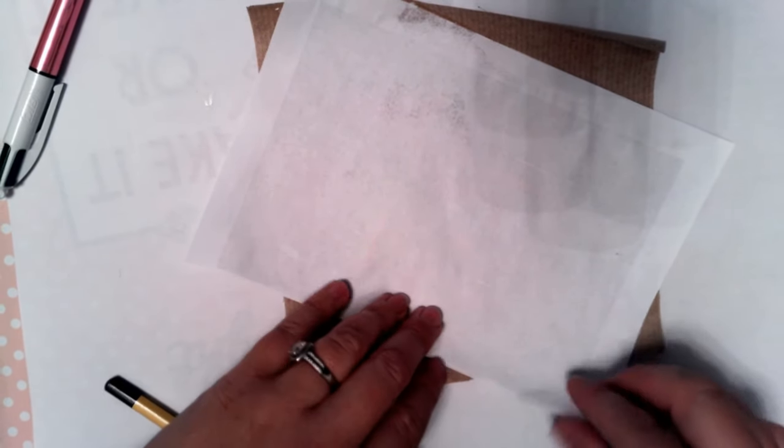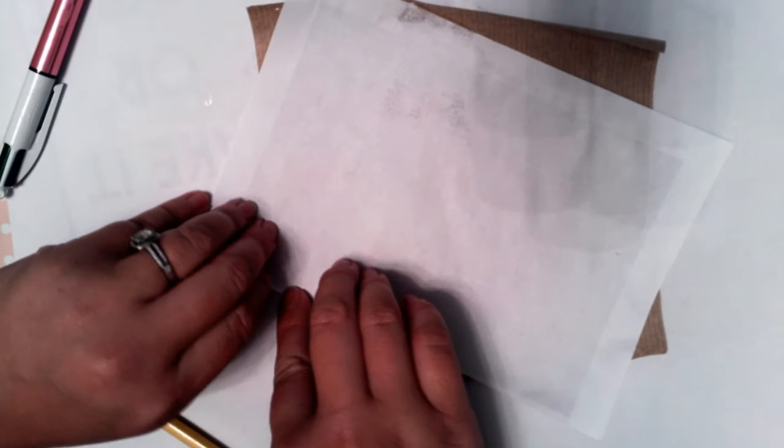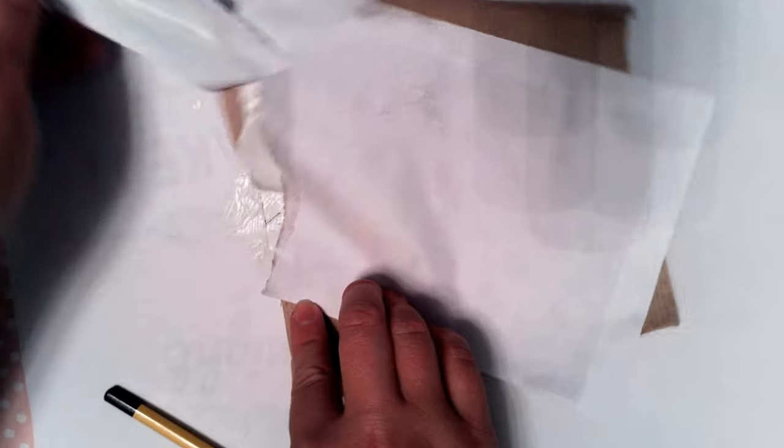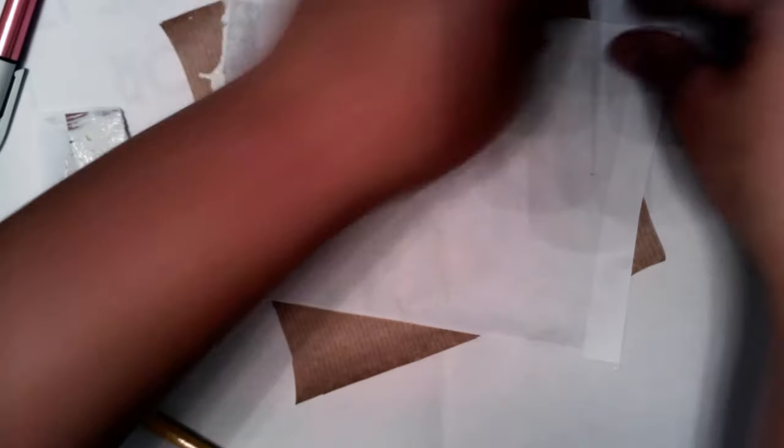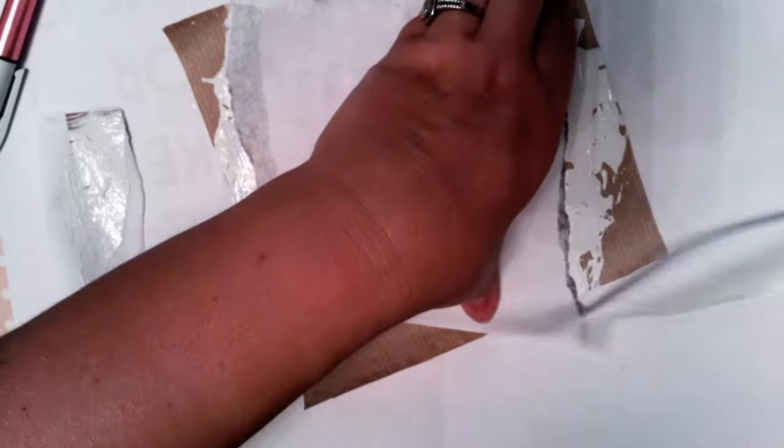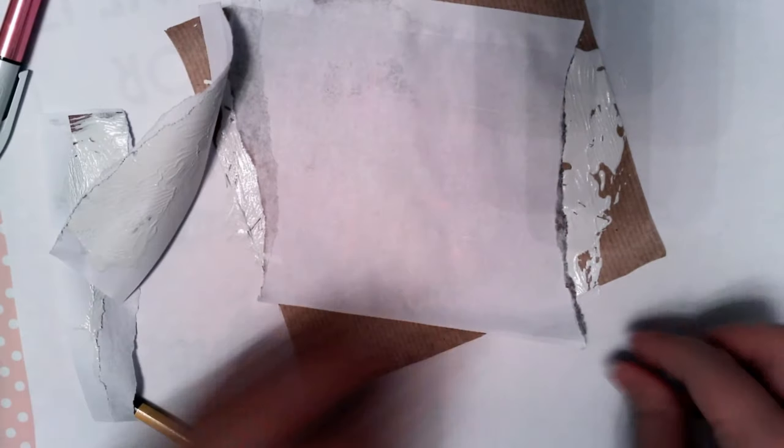For the bits that you don't need, you can either rip them off so you get a frayed effect, or you can cut them off. But I'm going to go for a ripped effect.